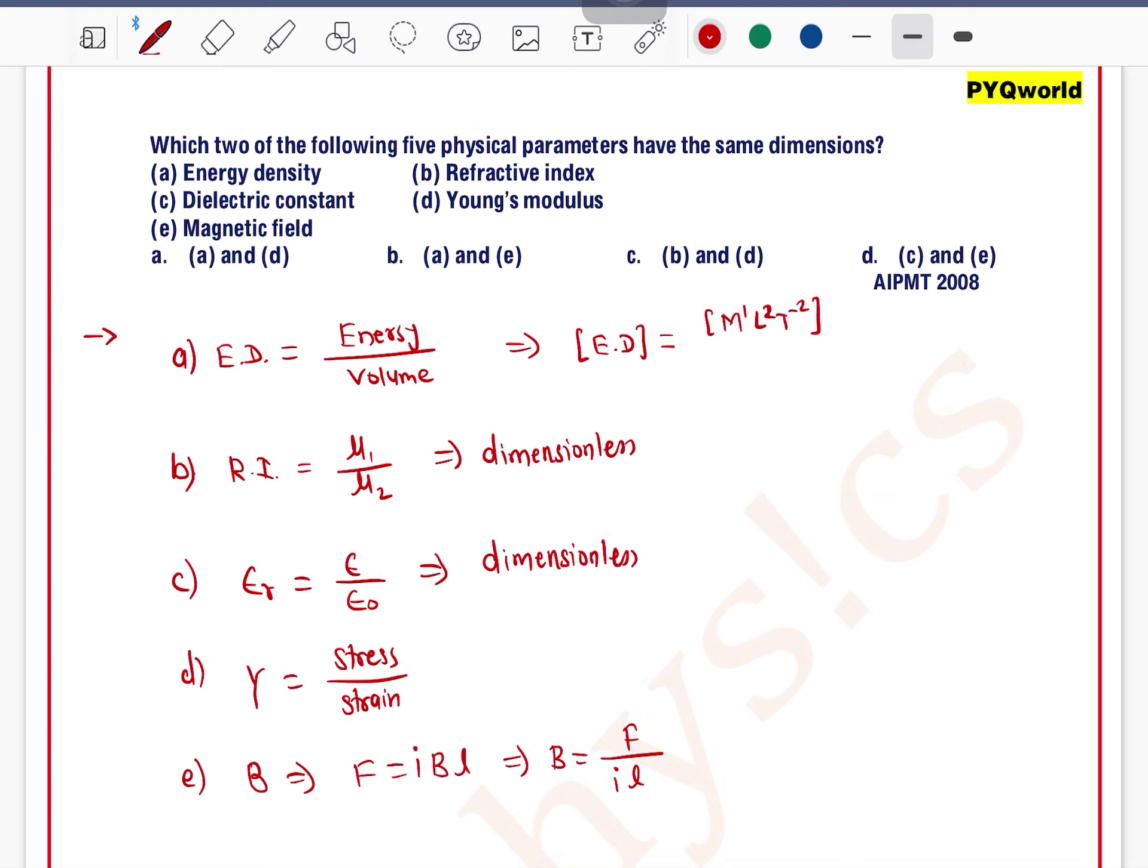Dimension of Y: Young's modulus equals stress upon strain. Stress is force upon area. Force is M1 L1 T minus 2 and area is L2, so this will be M1 L minus 1 T minus 2.